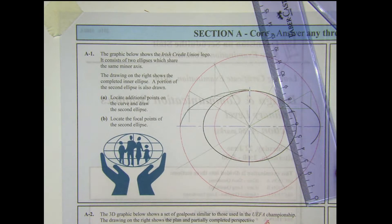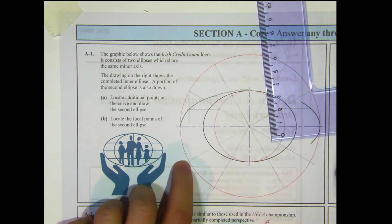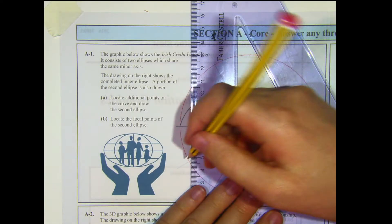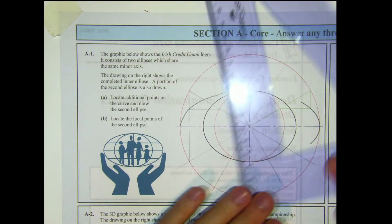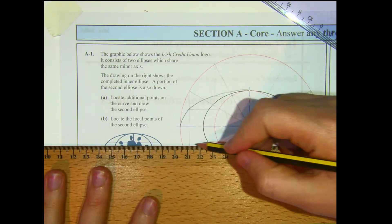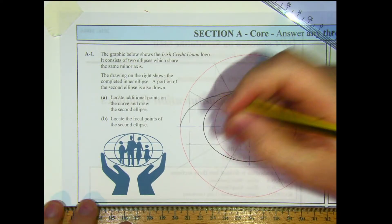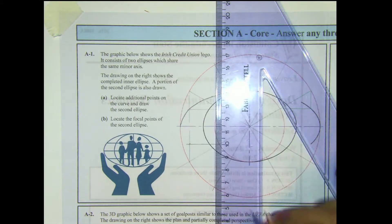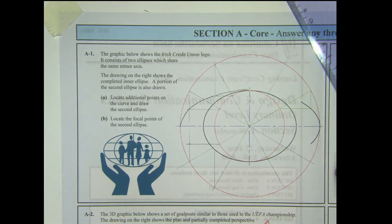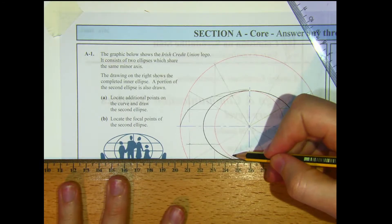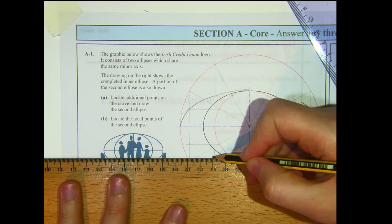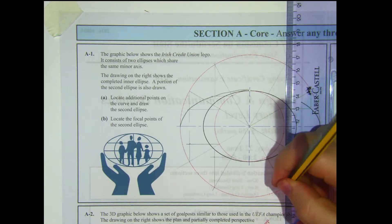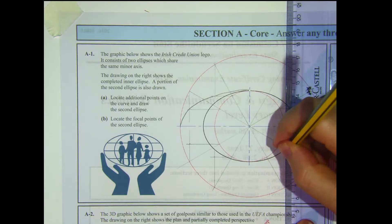Going to do the same thing down at the bottom. This line cuts the major auxiliary circle; perpendicular to the major axis, then the minor auxiliary circle gives me this point. Continuing on — it cuts the major auxiliary circle, goes perpendicular to the major axis, then perpendicular to the minor axis again, giving two more points. I'm going to work my way around.